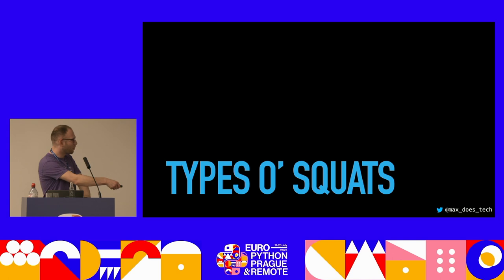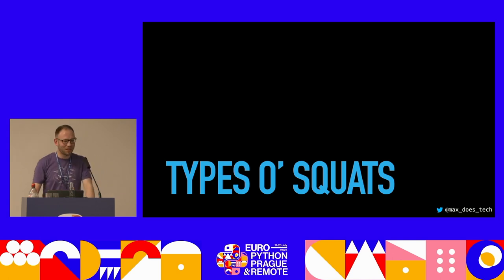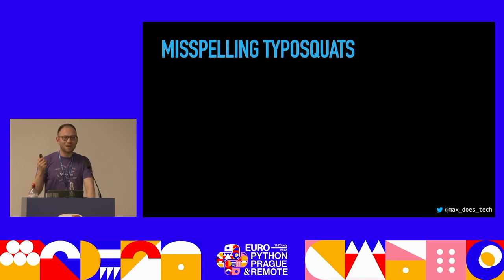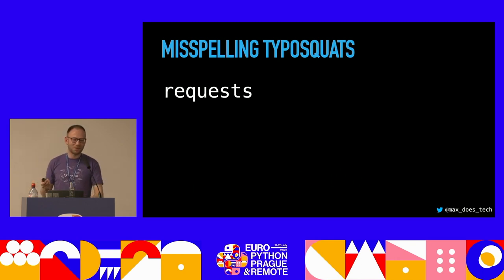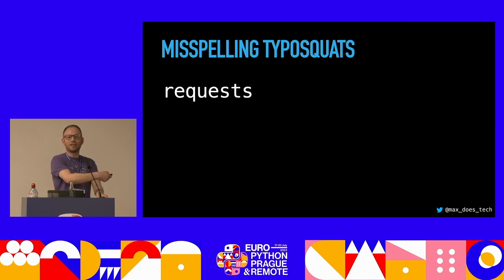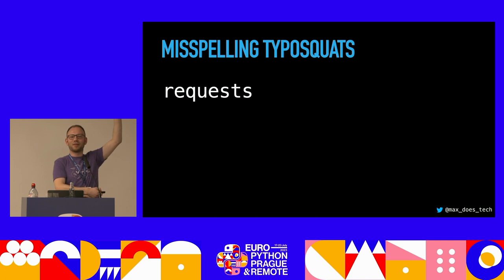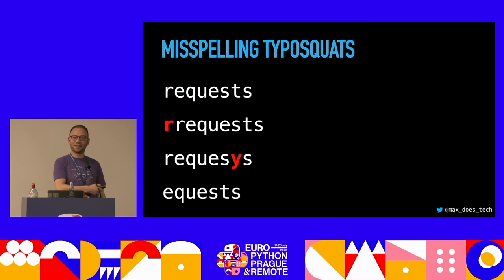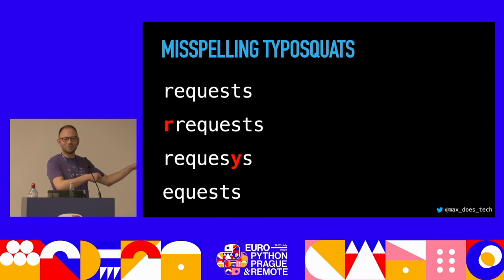Let's talk about types of squats — a pun I was very happy with. There's a misspelling type: everyone knows the requests package for HTTP requests. But reqeusts, request, requests2 — these were all real examples of malware found on PyPI that were typosquatting on the requests package. This is real.